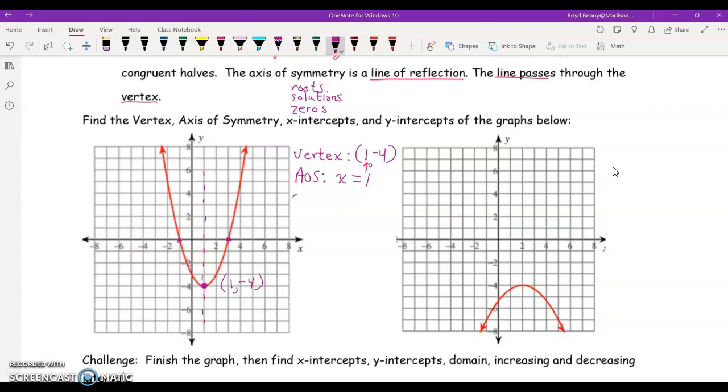So, let's say our x-intercepts are negative 1 comma 0 and 3 comma 0.